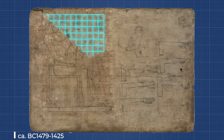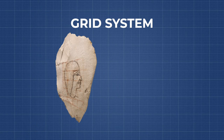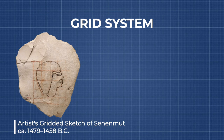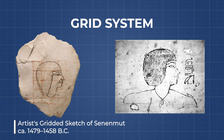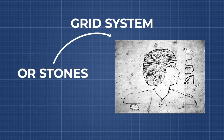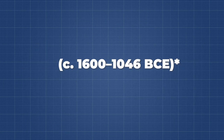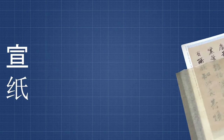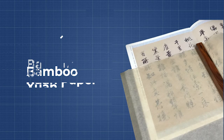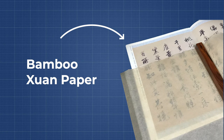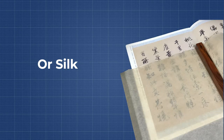The first ever recorded acts of tracing go back to ancient Egypt, where they used grids and proportional scaling to transfer images and hieroglyphics onto surfaces like papyrus. It was also seen in Chinese ancient art, where they often employed translucent paper or silk to reproduce intricate designs.